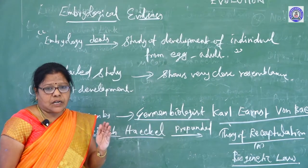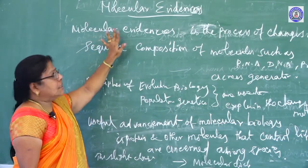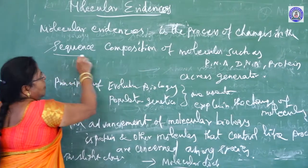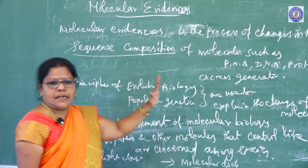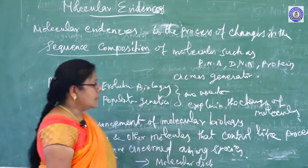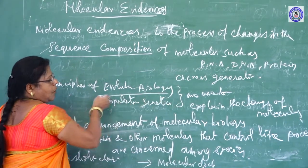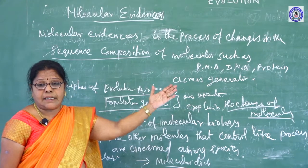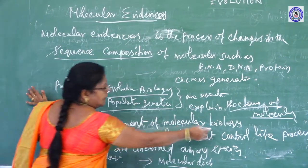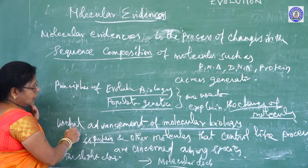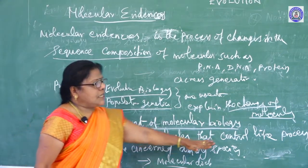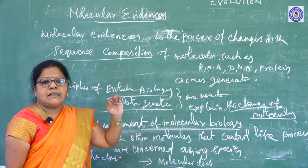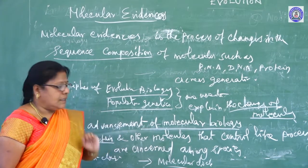The last evidence: molecular evidence. Molecular evidence involves changes in the sequence composition of molecules such as RNA, DNA, and proteins across generations. Principles of evolutionary biology and population genetics are used to explain changes in these molecules. The slight changes that take place in DNA, RNA, or protein are referred to as the molecular clock.